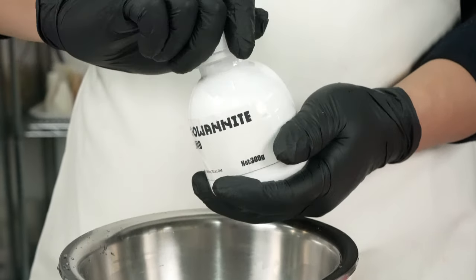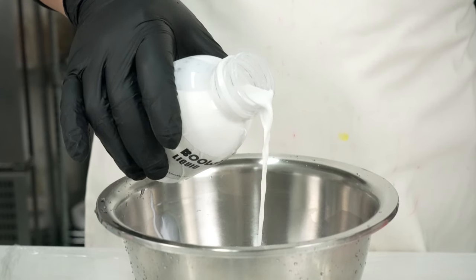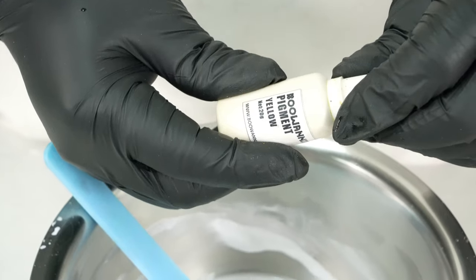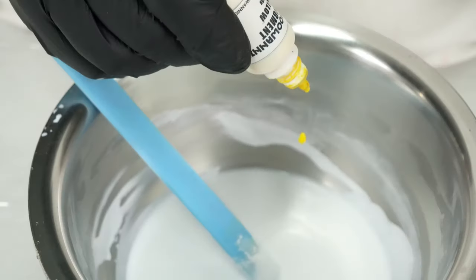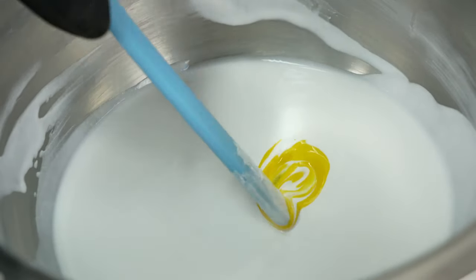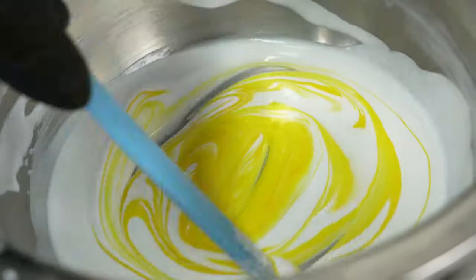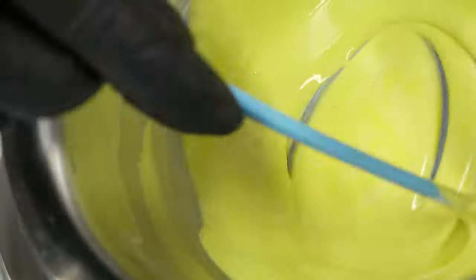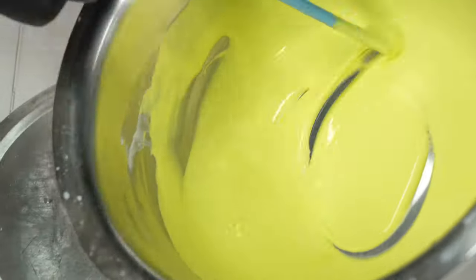Now, a common question people have is about the thickness of the mixture. We recommend keeping the layer of liquid at around 5 millimeters thick. This will give you a solid piece that is not too heavy or too fragile. Remember, the key to success in this step is to take your time and be patient. Don't rush the process, and don't worry if you make mistakes. With practice and experience, you will soon become an expert at buonite crafting.